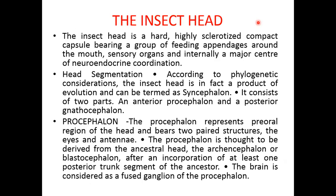The insect head is a hard, highly sclerotized compact capsule bearing a group of feeding appendages around the mouth, sensory organs internally, and serves as a major center for central neuroendocrine coordination.